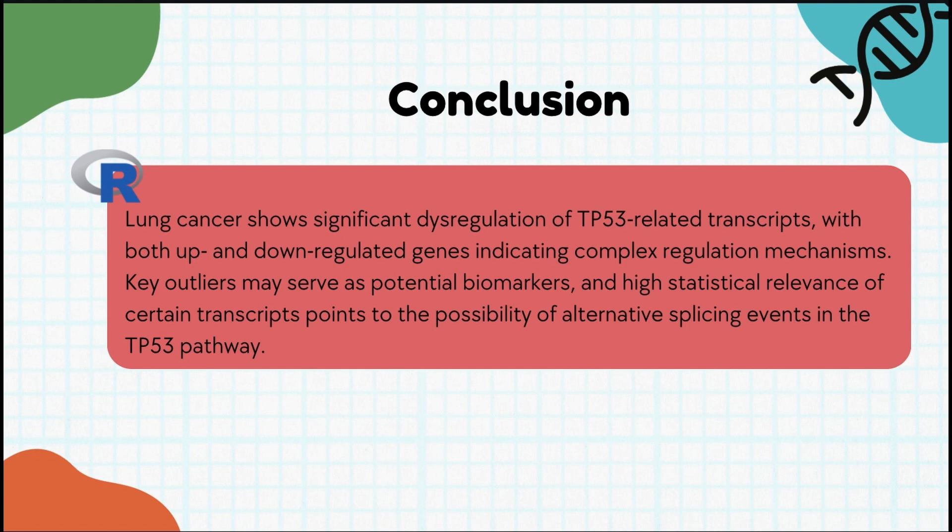We can conclude that lung cancer shows significant dysregulation of TP53-related transcripts. Both up- and down-regulated genes indicate complex regulatory mechanisms. The key outliers seen in both plots may serve as potential biomarkers, and the high statistical significance of certain transcript points suggests a possibility of alternative splicing events in the TP53 pathway.